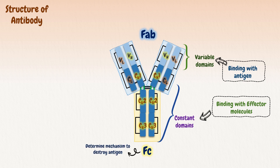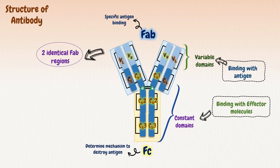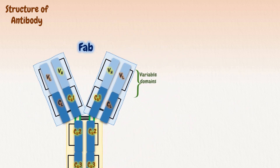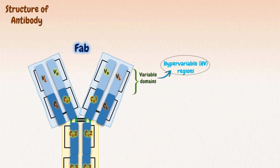The FC region determines the mechanism used to destroy the antigen, whereas the FAB region enables binding to a specific antigen. In any given immunoglobulin molecule, the two heavy chains and the two light chains are identical, giving an antibody molecule two identical antigen-binding sites. This gives the antibody the ability to bind simultaneously to two identical antigens on a surface, thereby increasing the total strength of the interaction, which is called its avidity.